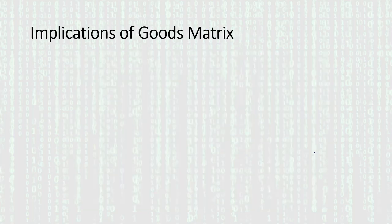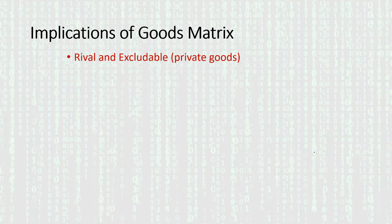Let's run through our goods matrix and talk about the implications of different kinds of goods with regard to how we might expect them to be produced and distributed so people can benefit. With private goods — which are rival and excludable — we've talked about this extensively. We have entrepreneurs in the market process, people seeking profit.